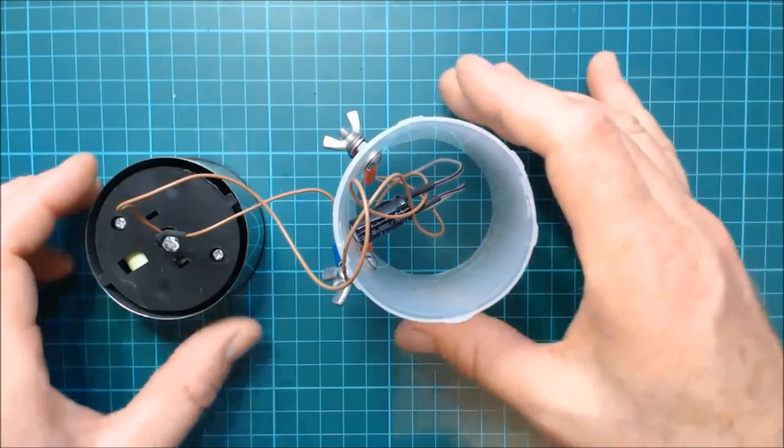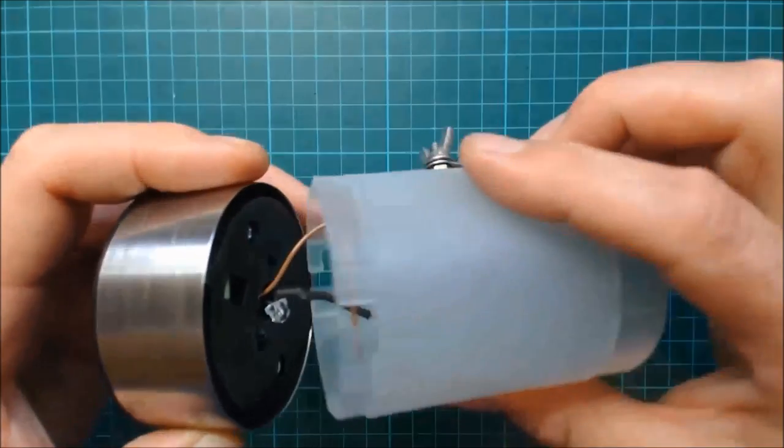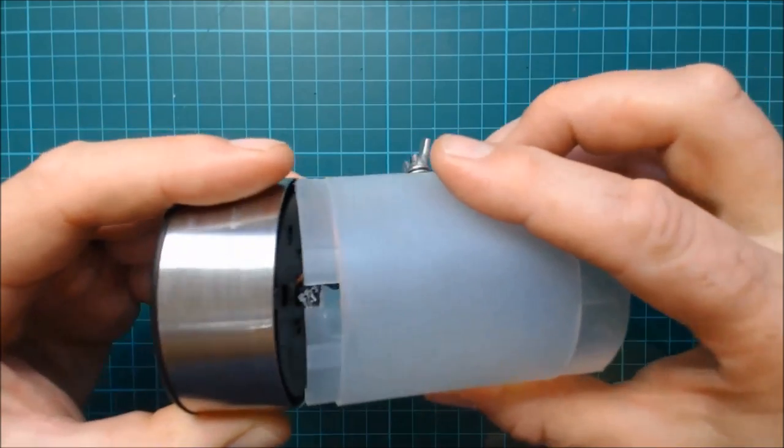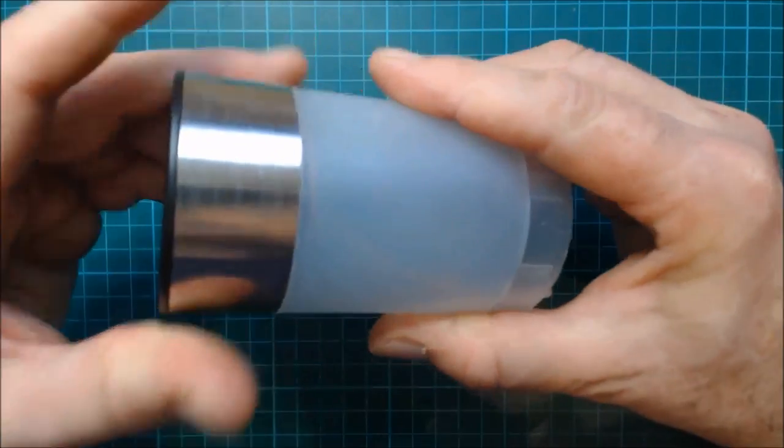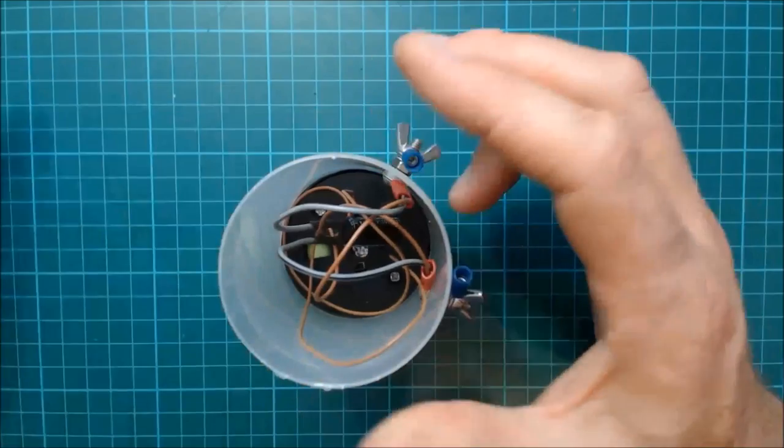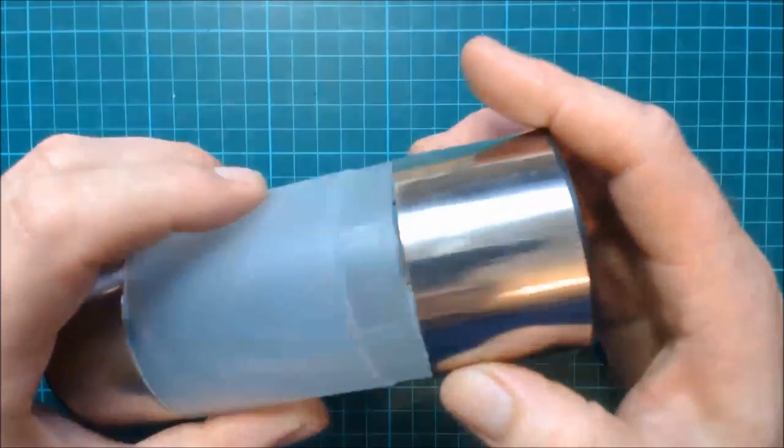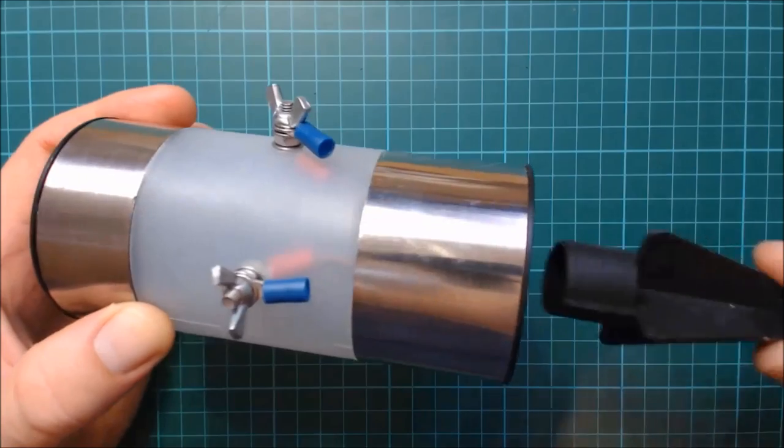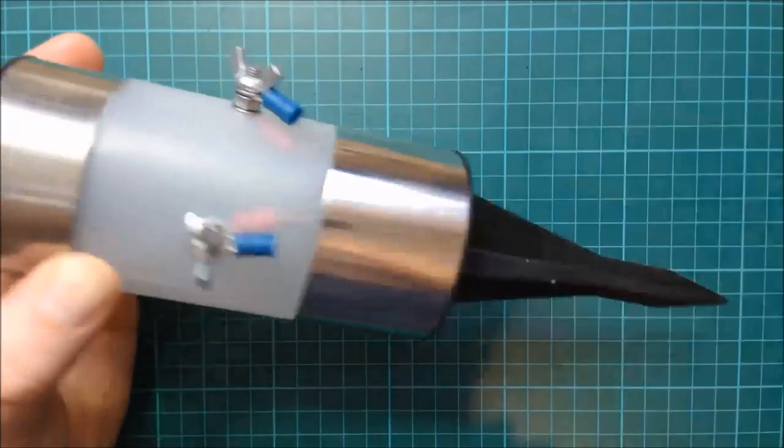And finally reassemble the case. Once that's done, switch it on and connect the slug fence to the ring terminals.